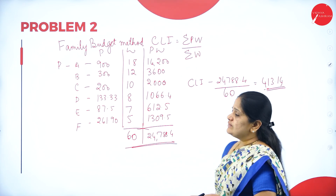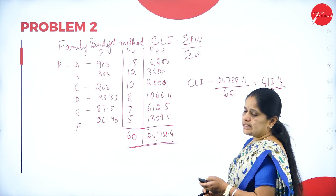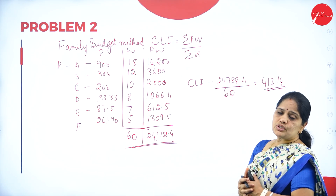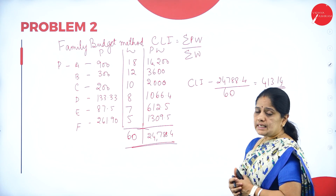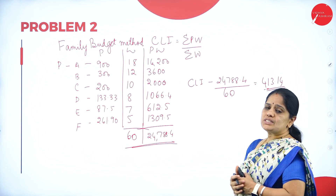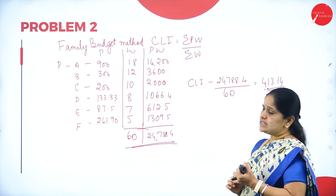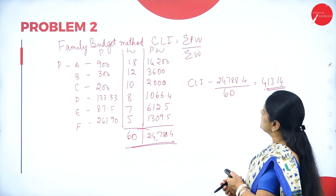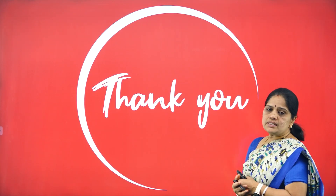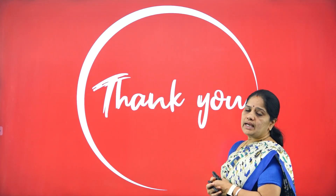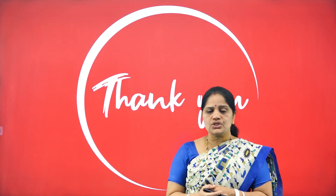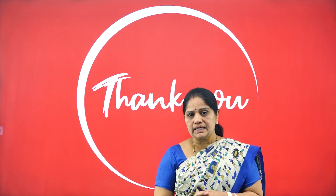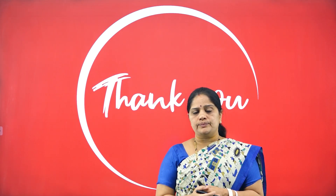We have just completed the consumer price index number based on the aggregate expenditure method and also the family budget method. With this we come to the end of this session. Hope you have all followed it. Thank you.